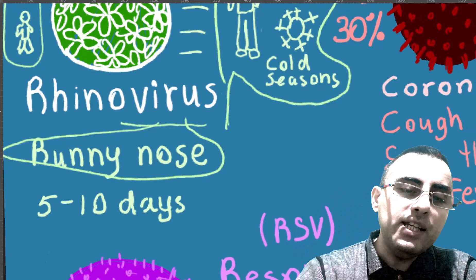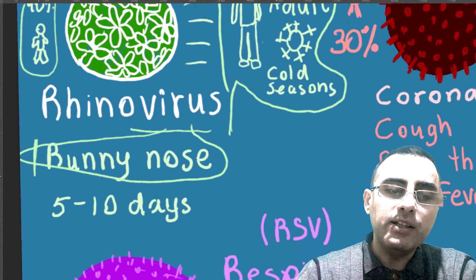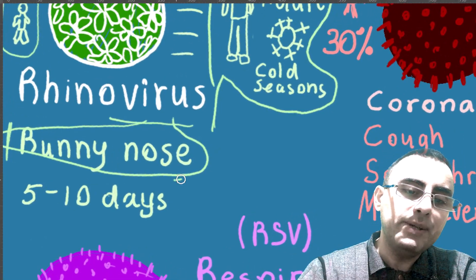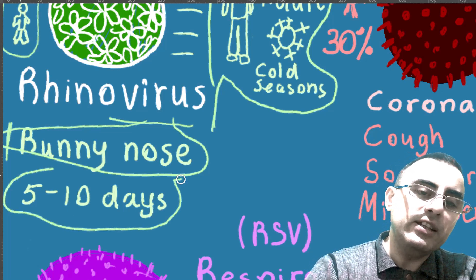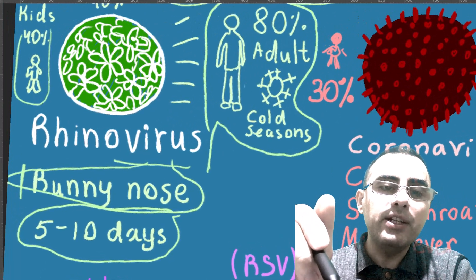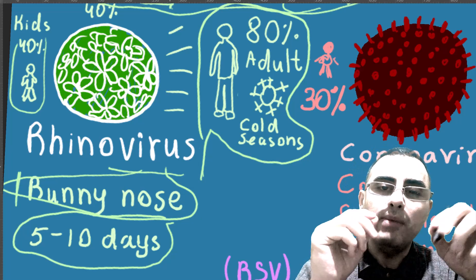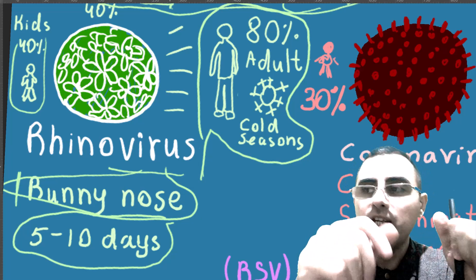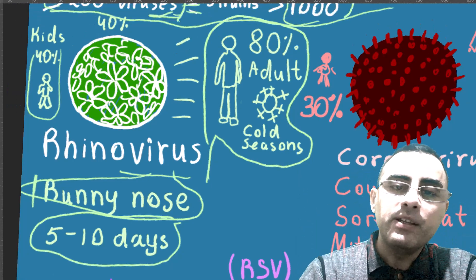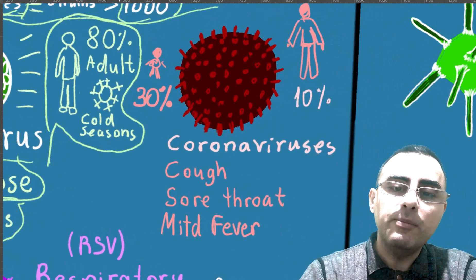The most common symptom of rhinovirus is runny nose, along with sneezing, headache, sometimes mild fever, sore throat, and coughing. The main symptom in rhinovirus is runny nose. Rhinovirus resolves itself without treatment in five to ten days, and it has a very short incubation period — you may already have symptoms the same day, the next day, or within three days.